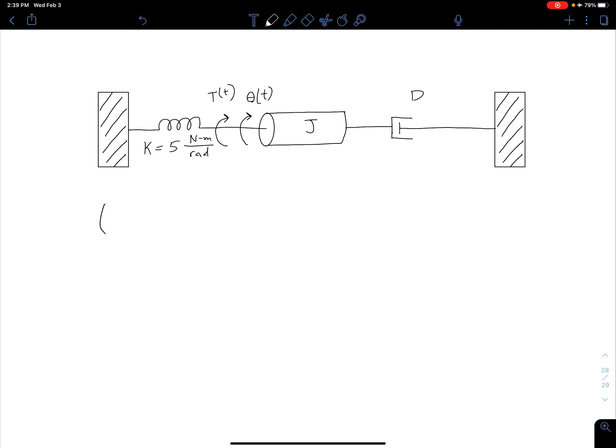We only have one degree of freedom so we're going to have one equation. We have J*s^2 + D*s + K, all of that multiplied by our theta which is a function of s and equal to the applied torque which is T(s).